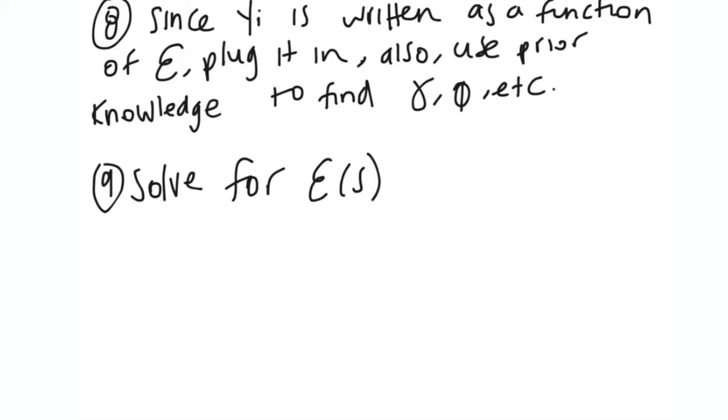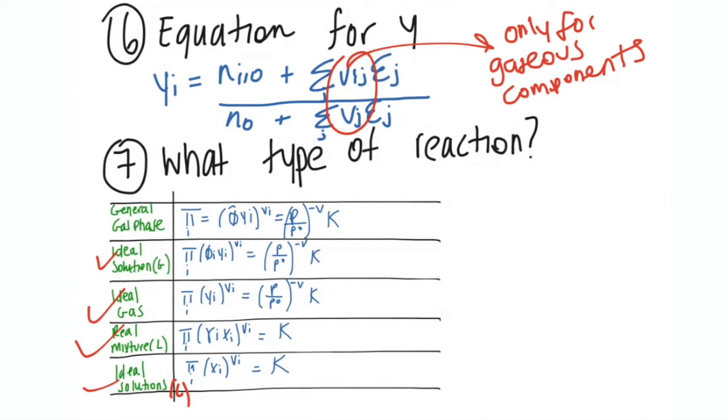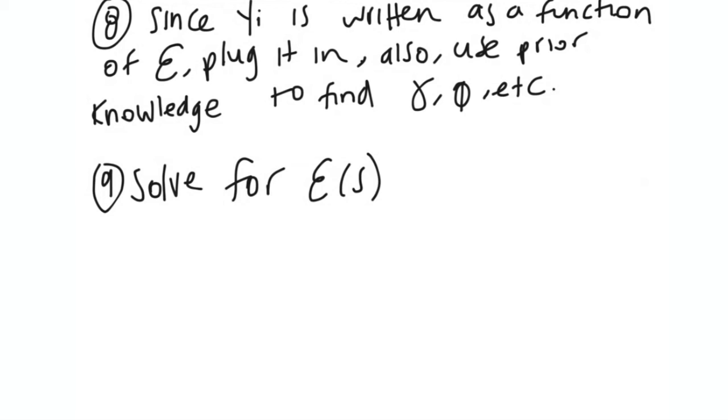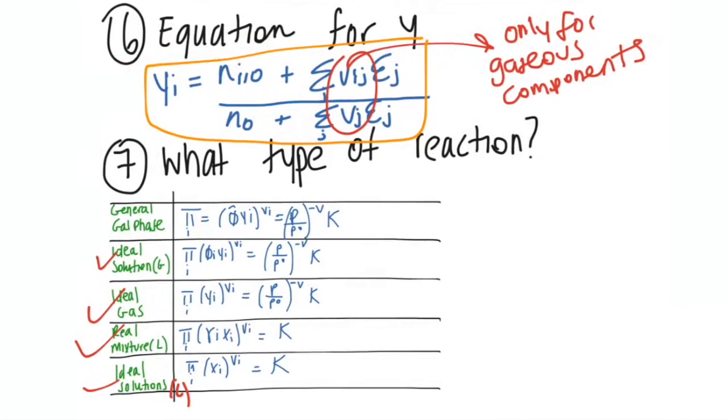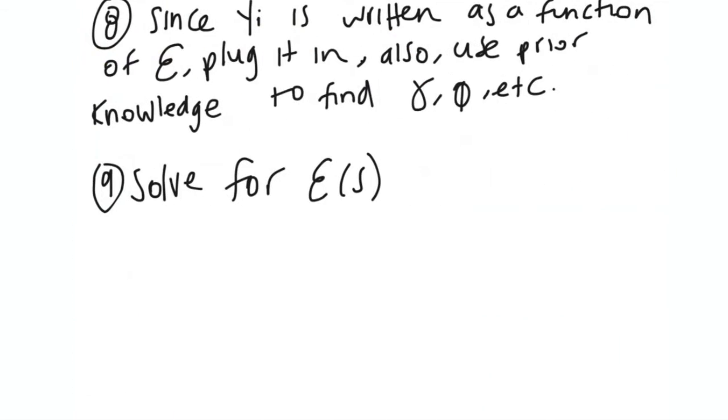So number eight is, since our mole fraction is written as a function of the reaction coordinate, which is what I've done right here - it's a function of the reaction coordinate, that ε - plug it in. So plug it into number seven and use your prior knowledge to find your activity coefficient, your fugacity coefficient, etc. I've already showed you in my fugacity video how to find things like your fugacity coefficient or the fugacity coefficient in the mixture, or your activity coefficient. So these are things I've shown you, and you can refer to my other videos if you don't remember how to find them.